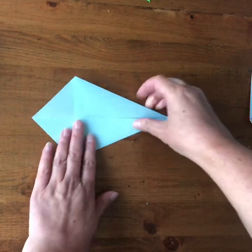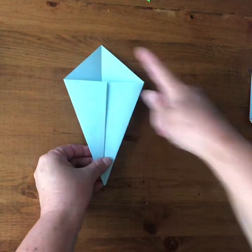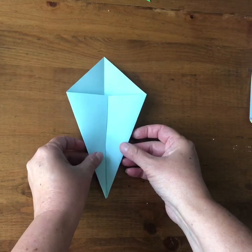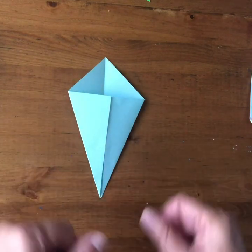And this is called the kite fold. And you can see that it's in the shape of a kite. So those are the three main types of folds that we're going to do.